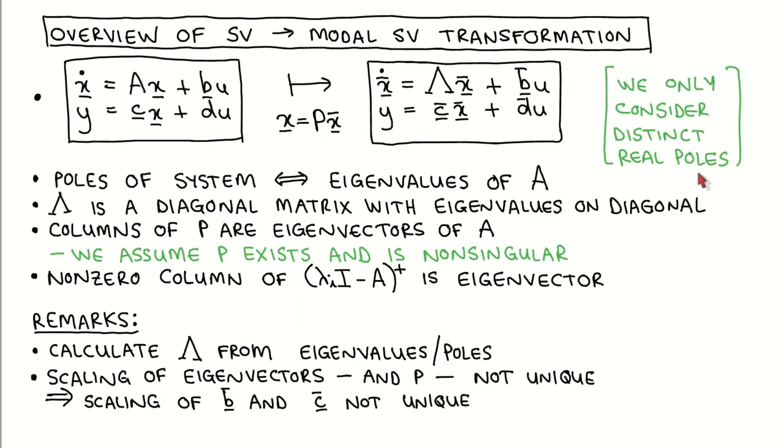We have seen previously that the poles of the system are also the eigenvalues of matrix A. What we then mean by the modal canonical form is that the matrix capital lambda is a diagonal matrix with the eigenvalues of A on its diagonal. We have also previously seen that the transformation matrix P that converts the system to modal canonical form has the eigenvectors of A as its columns.